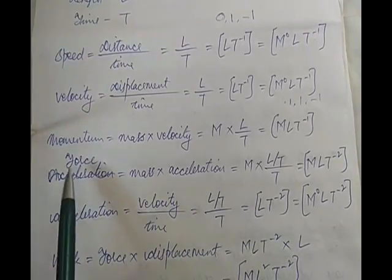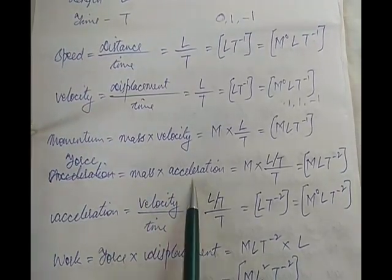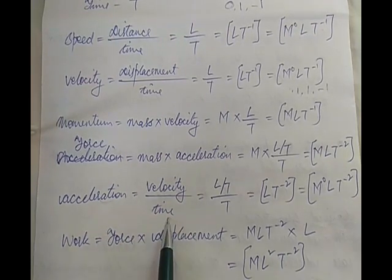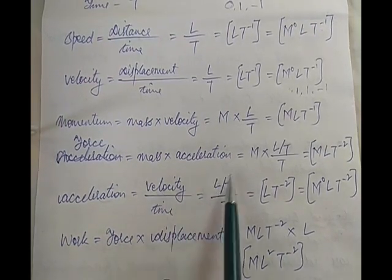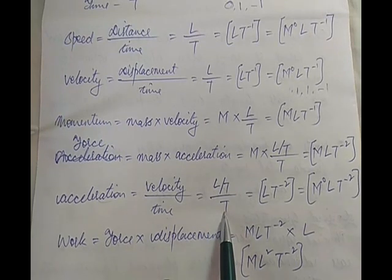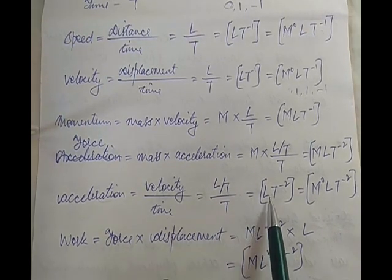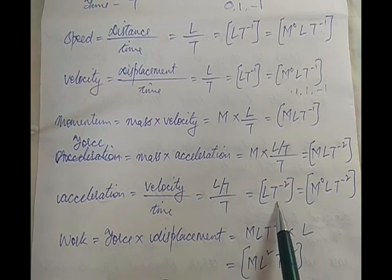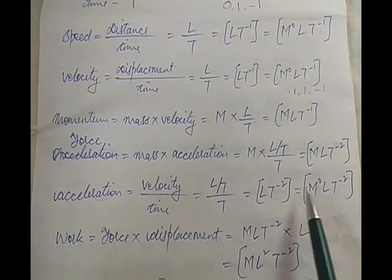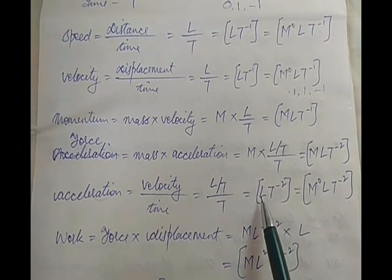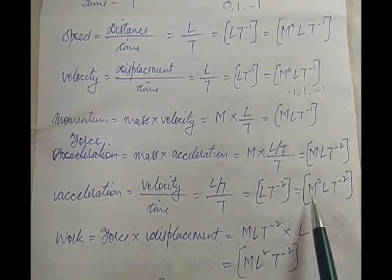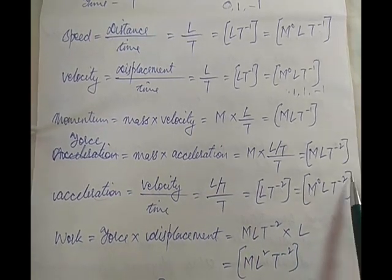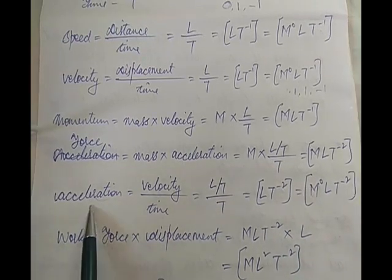Before we do force, let us do acceleration. Acceleration is velocity upon time. Velocity we know is L upon T, divided by capital T, which gives L T to the power minus 2. Since we do not have the term for mass here, we write M to the power 0, L, T to the power minus 2 — this is the dimensional formula for acceleration.